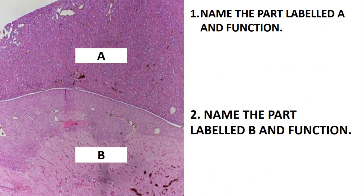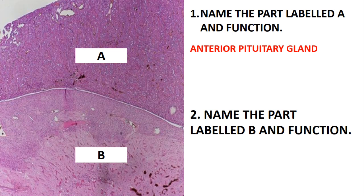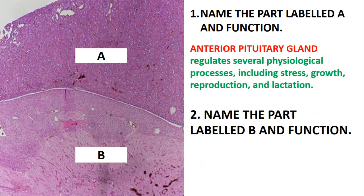Let's quickly move on and look at the next question: name the part labeled A and its function. This slide is just a slide of a pituitary gland. We need to understand that the pituitary gland has two sides: the anterior pituitary gland and the posterior pituitary gland. Part A is just the anterior pituitary gland.